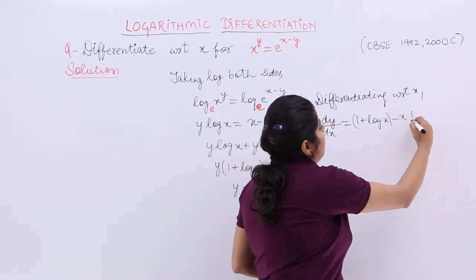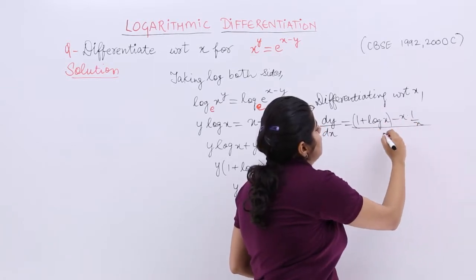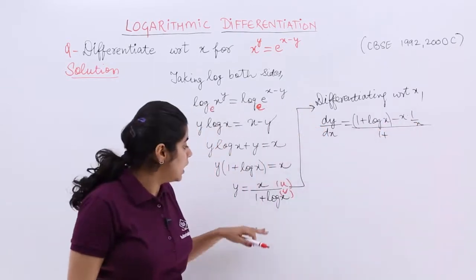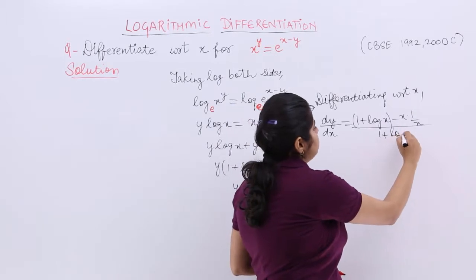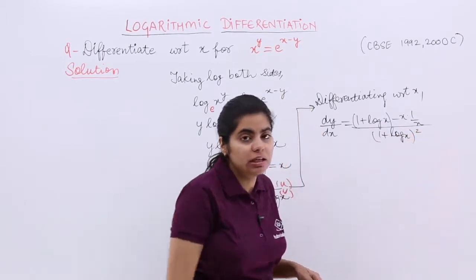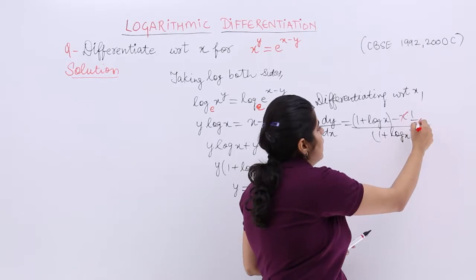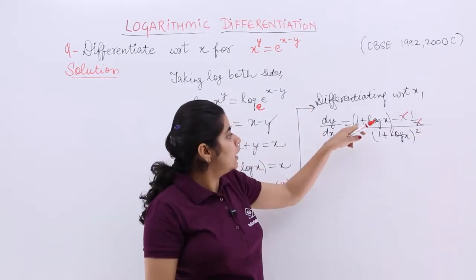Whole upon v square. So whole upon the denominator square. Now see if something is cancelled. It is very important to simplify. So x and x getting cancelled. 1 here, 1 here.